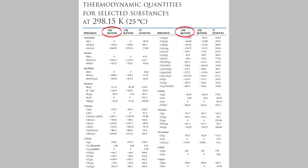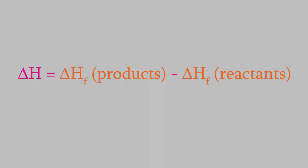We get the overall enthalpy of the reaction using this formula: the enthalpies of the products minus the enthalpies of the reactants. So let's try that for our reaction.